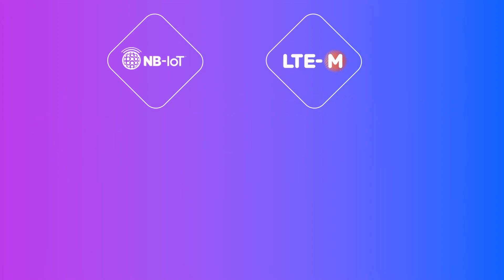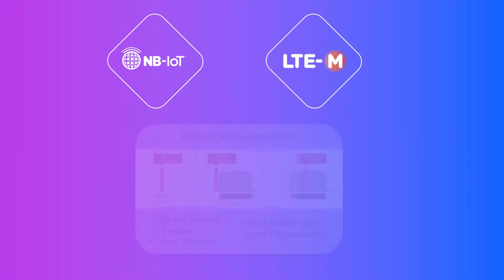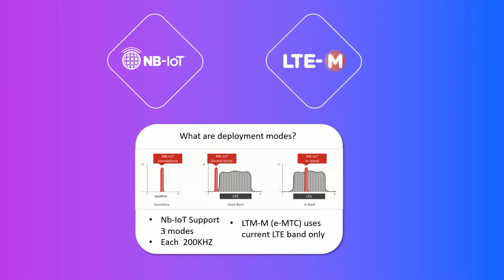For NB-IoT and LTE-M, they use licensed spectrum compatible with the current 4G network when deployed in in-band mode. NB-IoT networks are able to deploy in 3 modes: the standalone mode, guard band mode, and in-band mode, both occupying 200 kHz bandwidth. However, LTE-M, the eMTC, only uses the current LTE band, so in-band mode only.